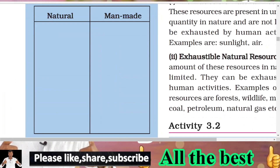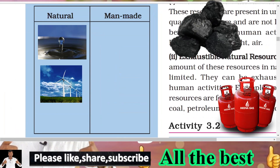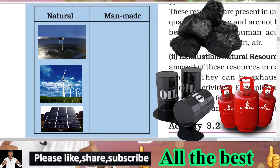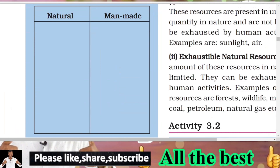Natural materials include water, coal, petroleum, methane gas, sunlight, and wind. These are natural materials. Some manmade materials are also listed — like chemicals prepared in laboratories, and objects made in factories.